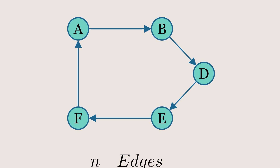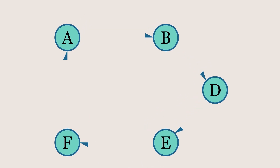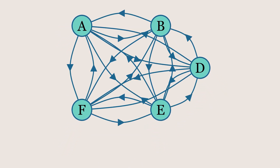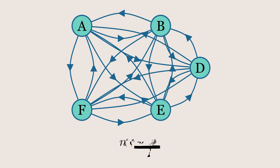The maximum number of edges in a directed graph means every node is connected to every other node. This would be twice the number of edges compared to the undirected case, because now there are two edges for each pair of nodes, one in each direction.